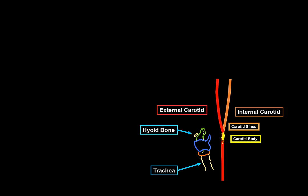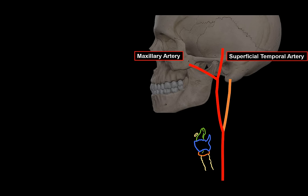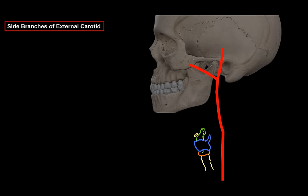Now let's focus on the external carotid artery. It continues upwards, and as it reaches the retromandibular fossa it divides into two terminal branches: the maxillary artery and the superficial temporal artery. The internal carotid is removed here to clear up space. Keep in mind the anatomical placements may not be 100% accurate — they are simplified to help you visualize and remember them.